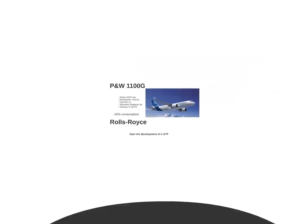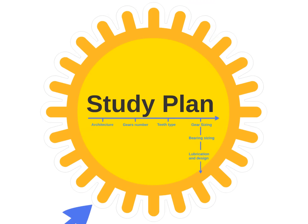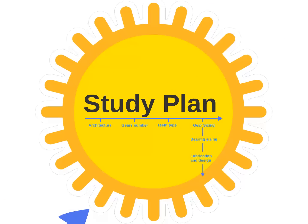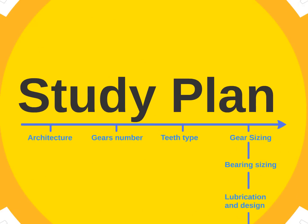Now, let me present you the way I want to go through this thesis. The idea is to design a planetary gear train. We will see a bit later why this type of train. The first step would be to choose the architecture of the train. Then, second step, to choose the optimal number of gears. The third step would be to choose the type of the gear teeth. Finally, gearing sizing, bearing sizing, and lubrication and design can be done at the same time.